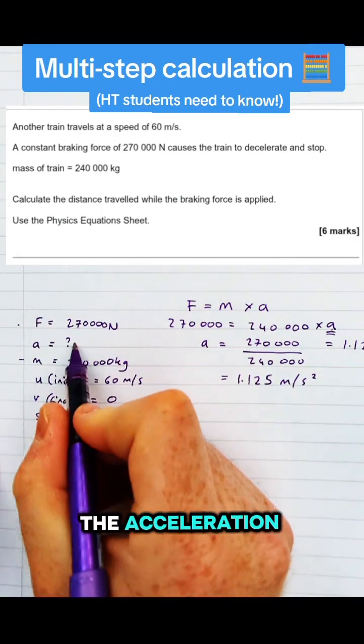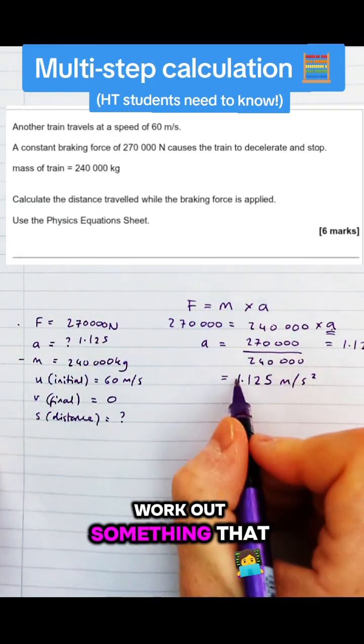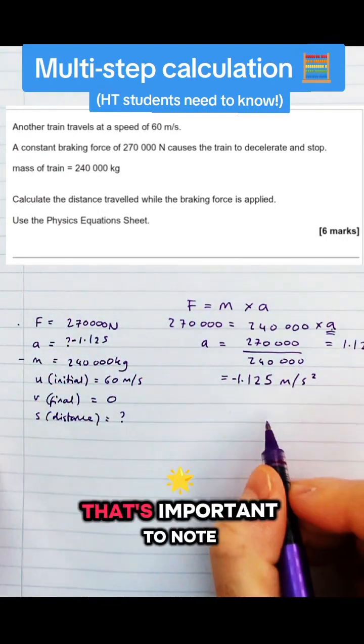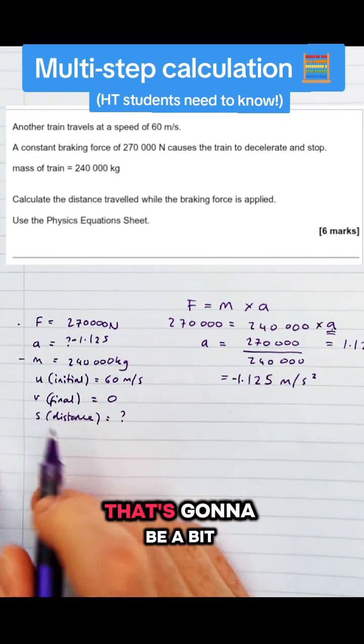So now we've got that acceleration, that's three of our six marks got already. So even if you can't get the final answer, work out something that you know is correct and your workings are correct and that will help us out. Now it's important to note this is technically negative acceleration because it's decelerating, that's going to be a bit useful later.